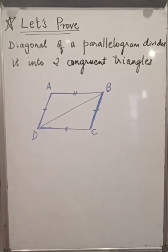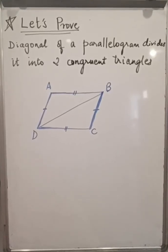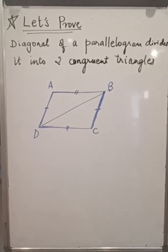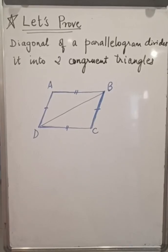Proof: diagonal of a parallelogram divides it into two congruent triangles. Congruent triangles are triangles that are of same shape and size.